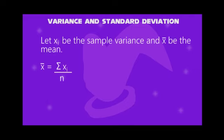Now, let us consider Xi as a sample variance, and X-bar is the sample mean. The sample variance shows the random numbers, and the mean is the sum of random numbers divided by total numbers n.